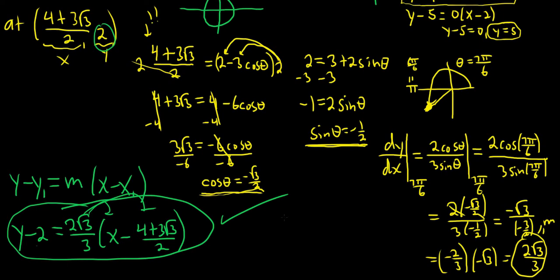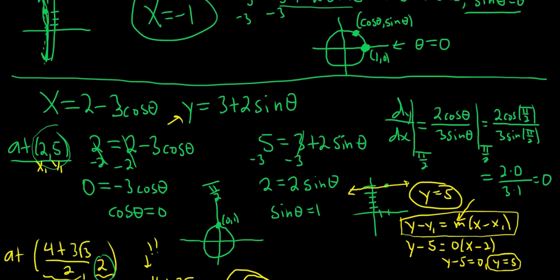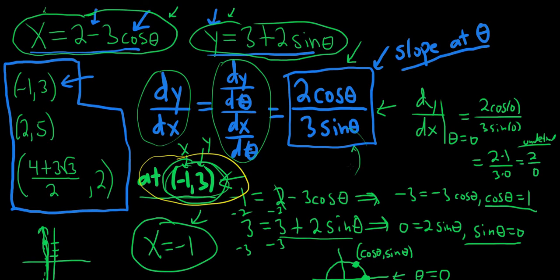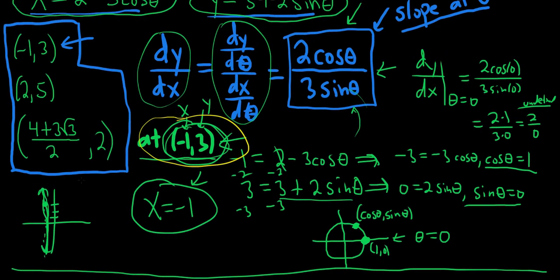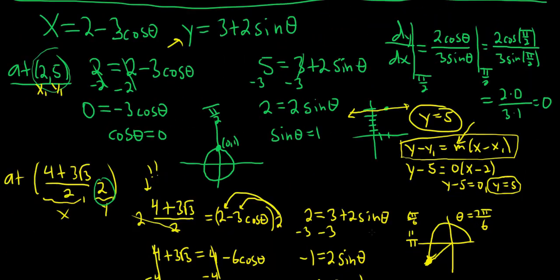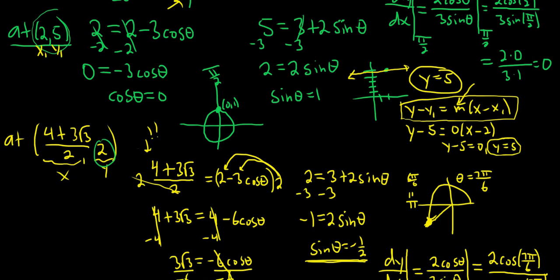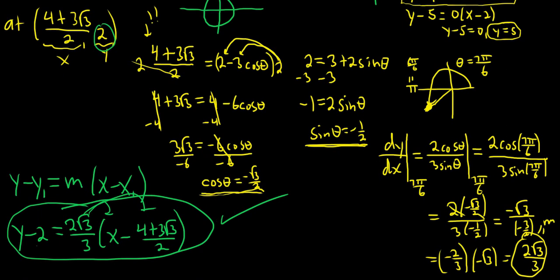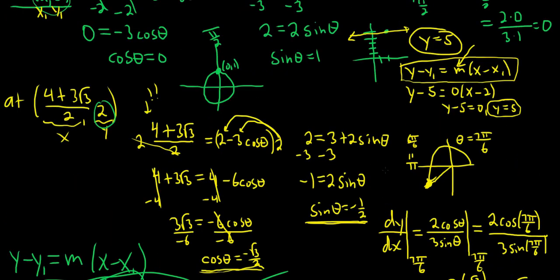The key process in this problem is: first compute dy/dx using the same formula throughout. Then in each part, use your x and y values to find θ by plugging into the parametric equations. Then plug θ back in to find the slope. In the first case we got an undefined slope giving a vertical line; in the second a slope of zero giving a horizontal line; and in the third a regular non-zero slope giving a standard tangent line equation.